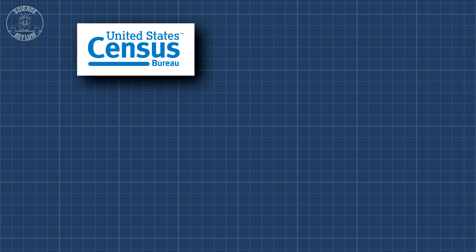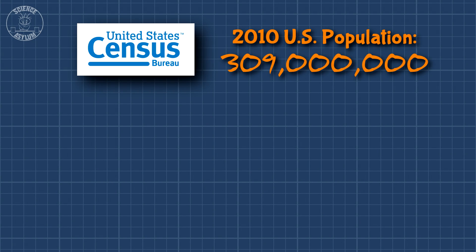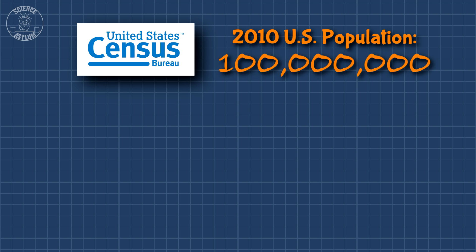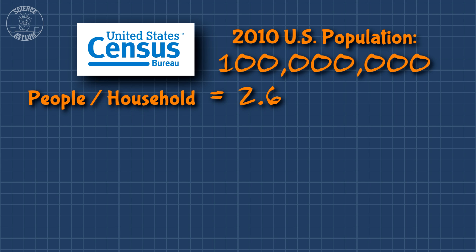Let's say we wanted to estimate how much it would cost to upgrade all U.S. homes to be energy efficient. The 2010 census says there were about 309 million people living in the U.S. — 3.09 is just shy of root 10, so we round down to 100 million. There is an average of 2.6 people per household, which rounds down to 1.